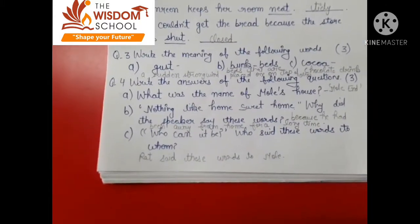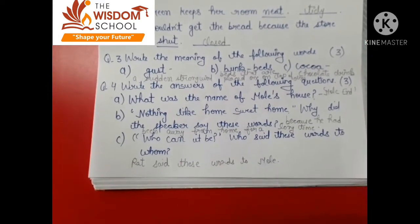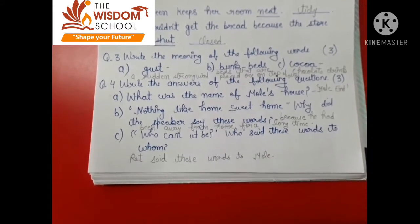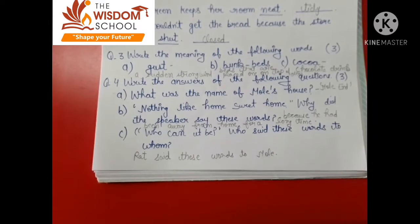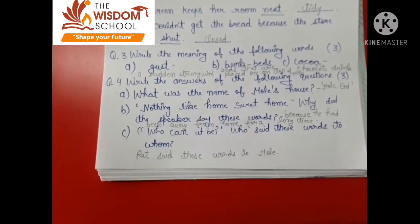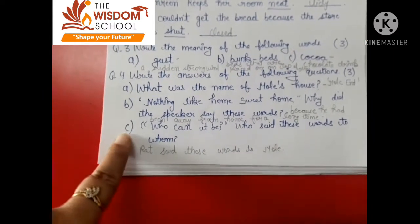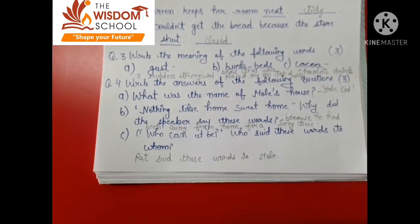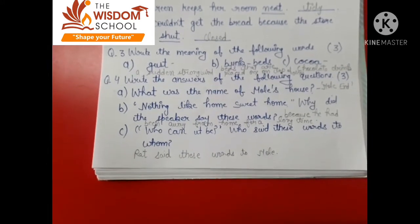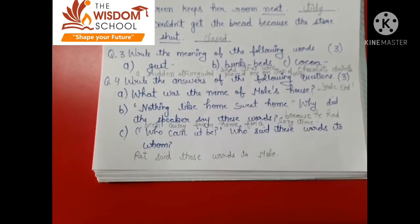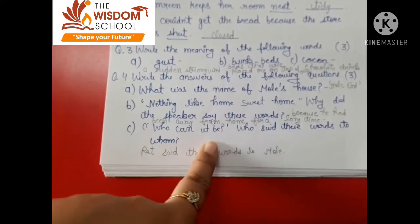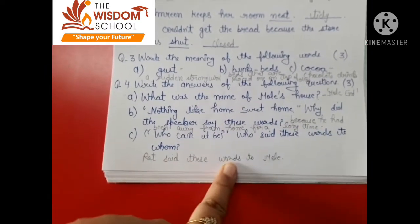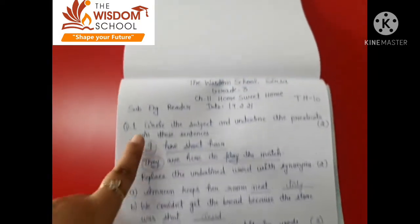Question number four: Write the answer of the following questions. What was the name of the mall's house? The answer is Mall End. Nothing like home sweet home — why did the speaker say these words? Because he had been away from home for a long time. Who can it be? — Who said these words and to whom? Rat said these words to Mole. That was your test solution.